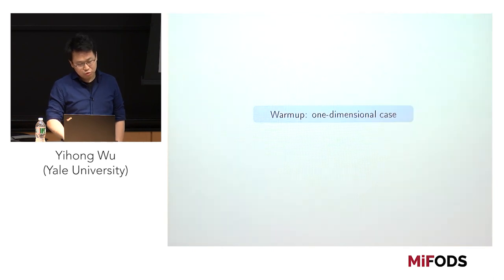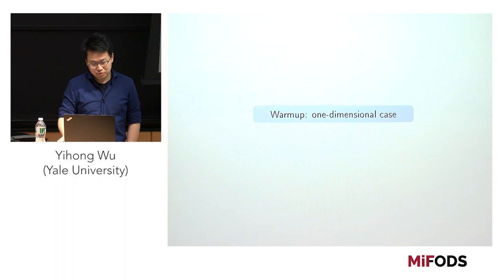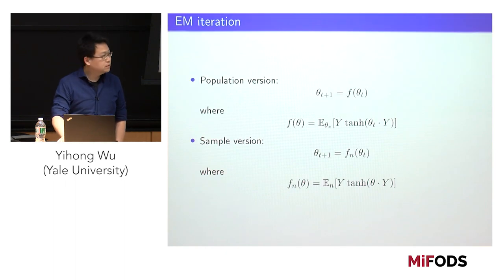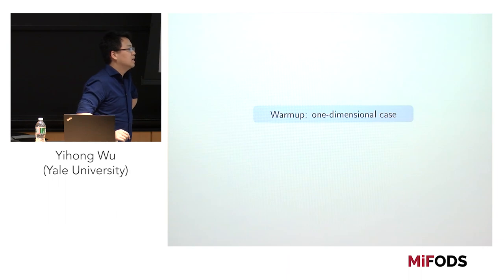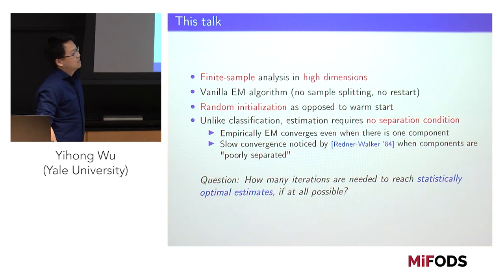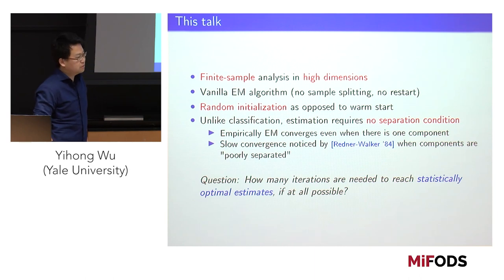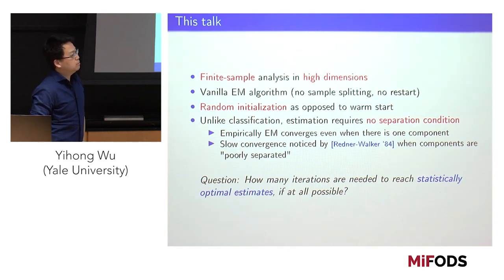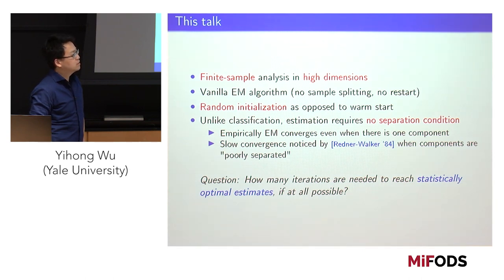I'll discuss what happens in one dimension as a warm-up — a simple exercise you could assign to a class. Question from audience: for the asymmetric general covariance case of two Gaussians, should EM still converge? I'm not sure about two components asymmetric. I recall a result — equally weighted three Gaussians in one dimension has a saddle point that is not the ground truth. For two Gaussians, the population landscape is good.